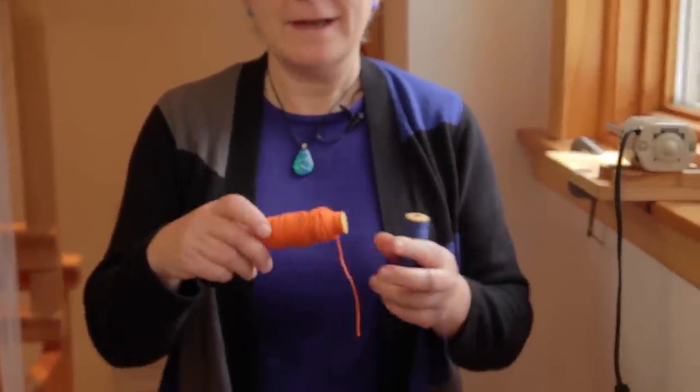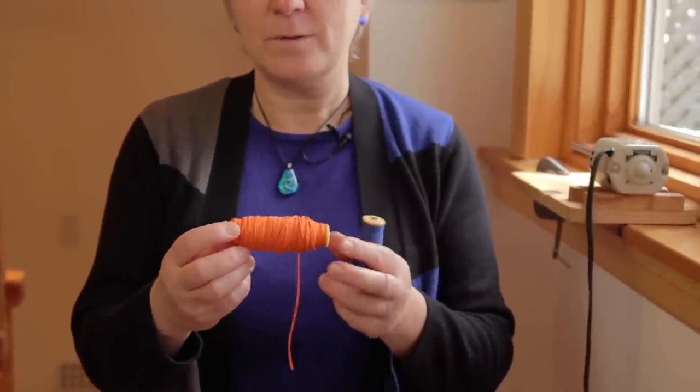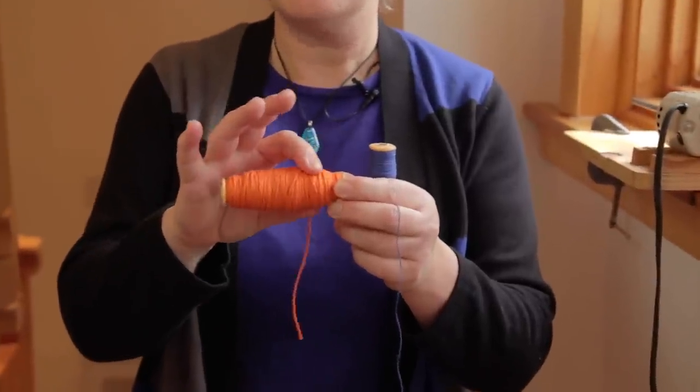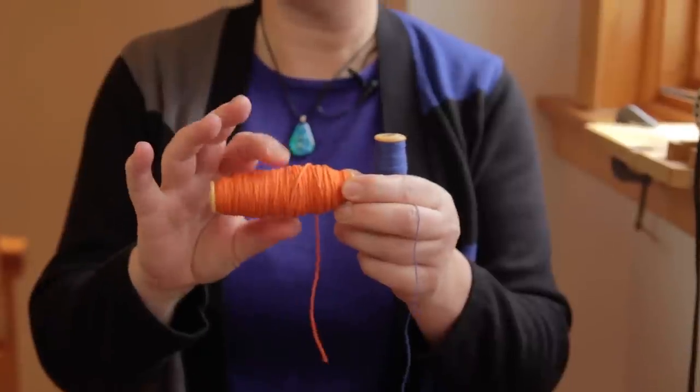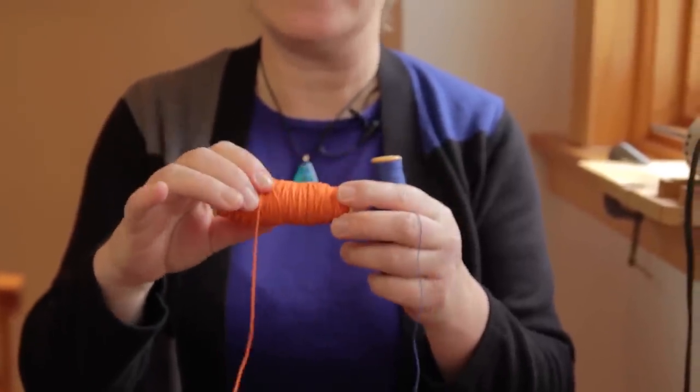In my hand here I have two bobbins. This is the way bobbins are often wound. They're often wound overwound, with more bulk to them and they're very squishy. This is not a successful bobbin to weave with.